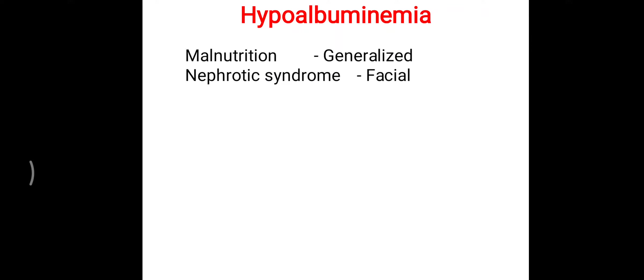One more condition is nephrotic syndrome, where the kidney is damaged — particularly the glomeruli are damaged. Due to damage in the glomeruli, whenever blood passes through them, albumin will be filtered and appear in the urine. In nephrotic syndrome, typically facial edema is seen, and that is suggestive of hypoalbuminemia.